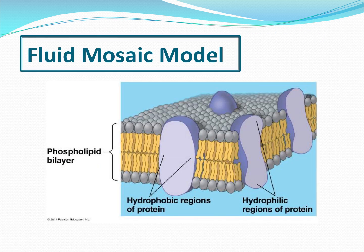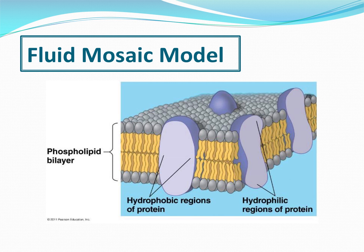We call this model the Fluid Mosaic Model. Fluid meaning movable — like water is fluid — so the cell membrane is not rigid like a cell wall; it can bend and move. Mosaic, like a mosaic tile structure, means it's made of many different pieces. You have the bilayer — same as the sandwich model, two layers facing each other — and the proteins are not totally covering the top and bottom but are sporadically spread out, with some going straight through the membrane.